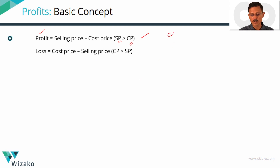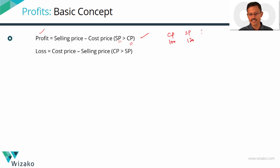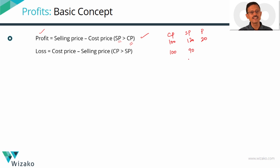Let's take a very simple example. Cost price is 100, selling price is 120. Since the selling price is greater than the cost price, the trader makes a profit of 20. Conversely, if the cost price is 100 and the trader sells for only 90, the selling price is less than the cost price, so he makes a loss of 10.